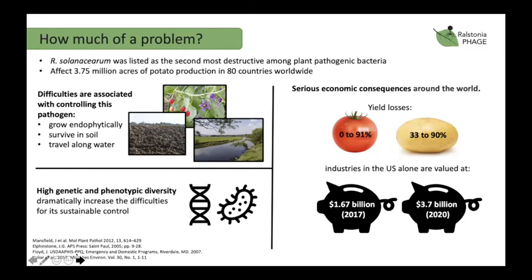Ralstonia is difficult to control because it can grow endophytically and survive in the soil and in temperate regions travel in water. It has high genetic and phenotypic diversity, which dramatically increases the difficulties for sustainable control because it can affect so many different types of hosts. Previous research has shown yield losses for tomato of between 0 to 91 percent, and for potato of 33 to 90 percent.